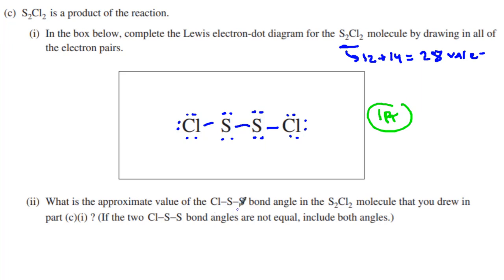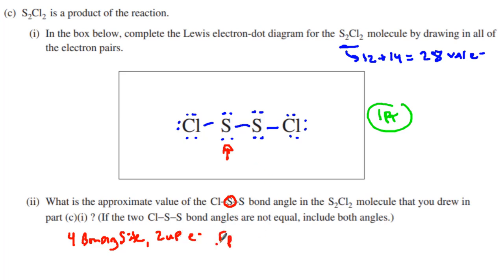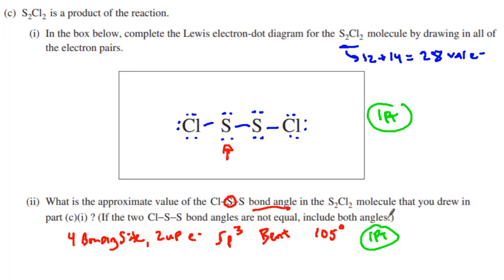They want the approximate bond angle of the Cl-S-S bond angle, so we look at the middle sulfur atom. It has four bonding sites and two unshared pairs of electrons — four bonding sites means sp3 hybridization. sp3 can be tetrahedral, trigonal pyramidal, or bent. With two unshared pairs, the shape is bent, and the bond angle is approximately 105°. You get one point for anything between 104° and 109.5°. I like to stay consistent: tetrahedral = 109.5°, trigonal pyramidal = 107°, bent = 105°.